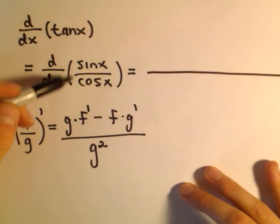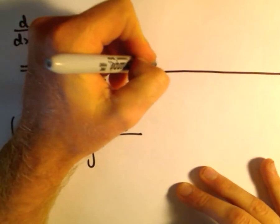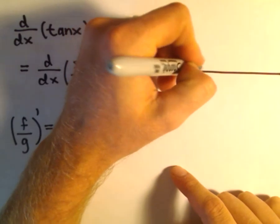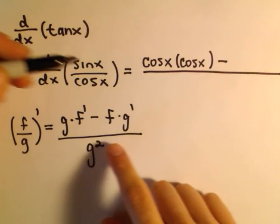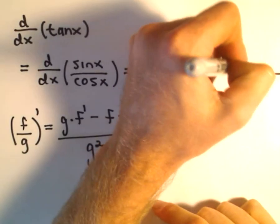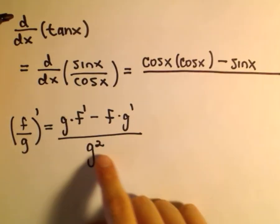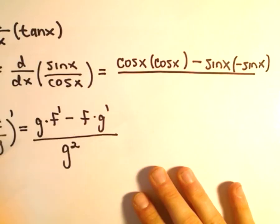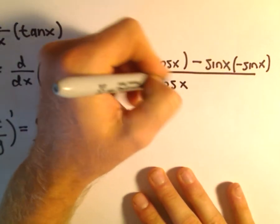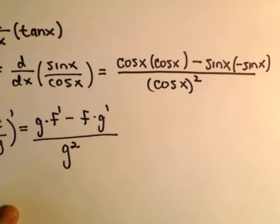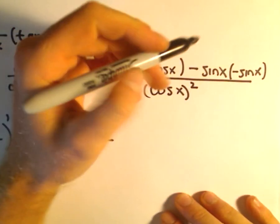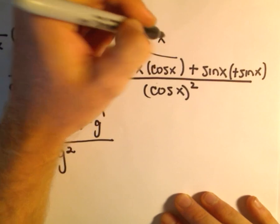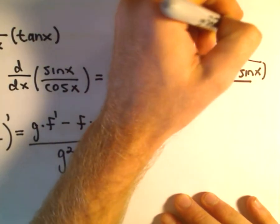If we take the derivative of sine over cosine, we leave the denominator alone — that's just cosine x. The derivative of the numerator: the derivative of sine gives us cosine. Then we stick a negative in between, leave the numerator alone as sine x, and take the derivative of the denominator, so the derivative of cosine x is negative sine x. All over the denominator cosine x squared. Notice we've got negative sine x times negative sine x, which gives us positive sine squared x, and cosine times cosine is cosine squared x.